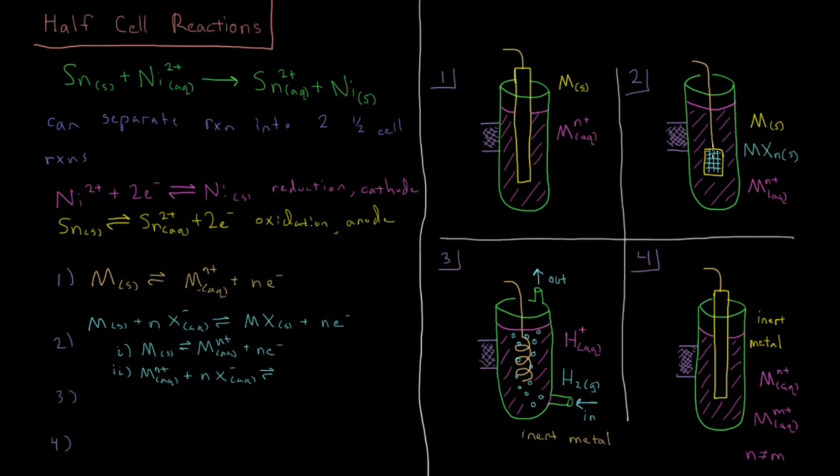Then they interact with the counter ion in solution and they precipitate and deposit back onto this foil which is on top of the electrode to form MXn solid. So the net is that you have the metal and some solution counter ion forming a metal salt and some electrons which can go through our wire into the other half cell.